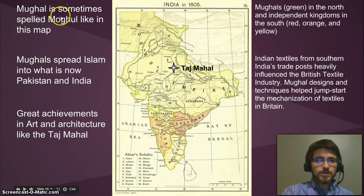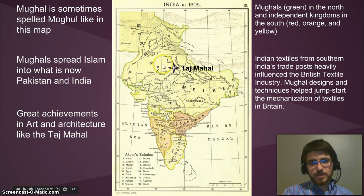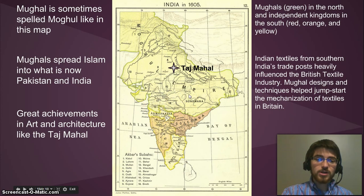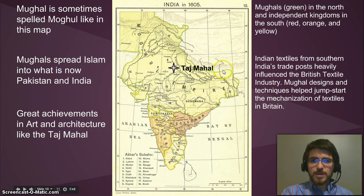Notice Mughal is sometimes spelled Mughal as on this map. This is India in 1605. The Mughals spread Islam into what is now Pakistan and India — you can see they covered all this area: Pakistan up here and then down into India, all the way down here. But southern India, you can see, has these other nations shown in different colors. Some really important achievements in art and architecture include the Taj Mahal, which is placed right here between these two major rivers. The Mughals in green take this whole northern zone and even pushed further down later in this time period. But the independent kingdoms in the south are trading with Europeans on their own, which we'll see in another map.